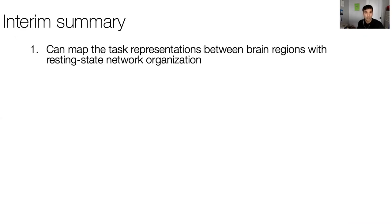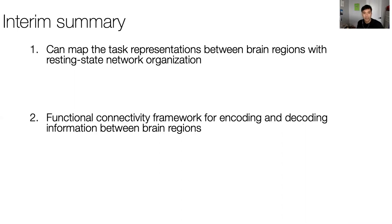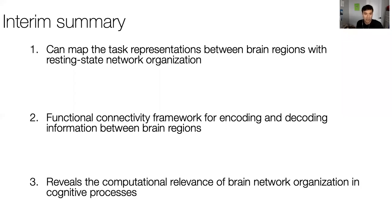To summarize the first part: we can map task representations between brain regions using resting-state network organization. Functional connectivity can be understood as how information is encoded and decoded between pairs of brain areas—information in a given brain area can be decoded by a downstream region using the connections between them. This reveals the computational relevance of brain network organization in cognitive processes and the functional importance of resting-state networks in producing task activations.